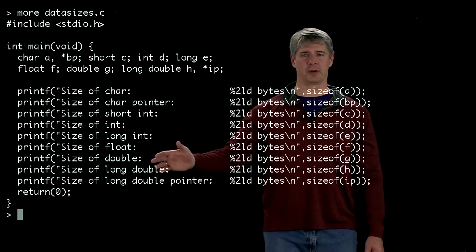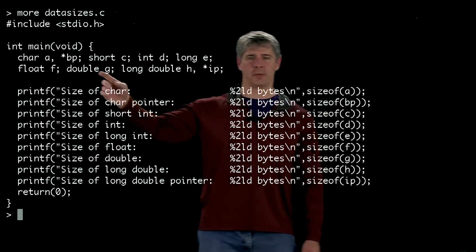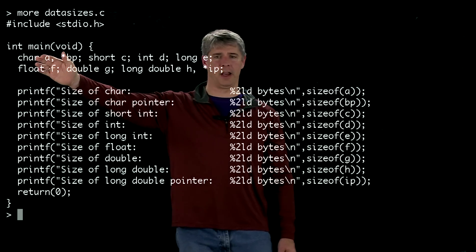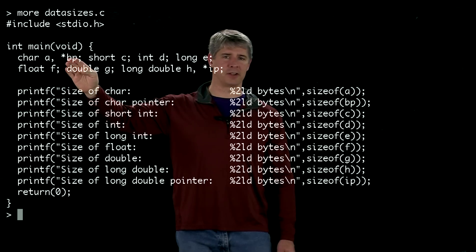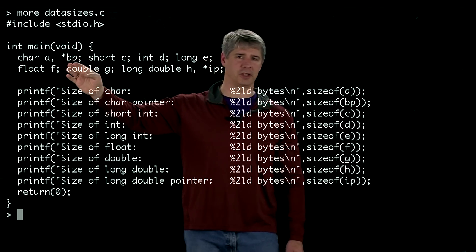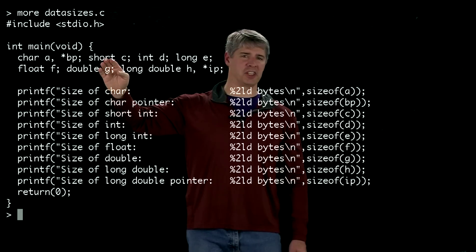So here I've listed it in my terminal window. You can see the first thing that we do in the main function is define a character, a, char a, as well as a pointer to something of type char. So bp is a pointer to char. We've defined a short integer c.